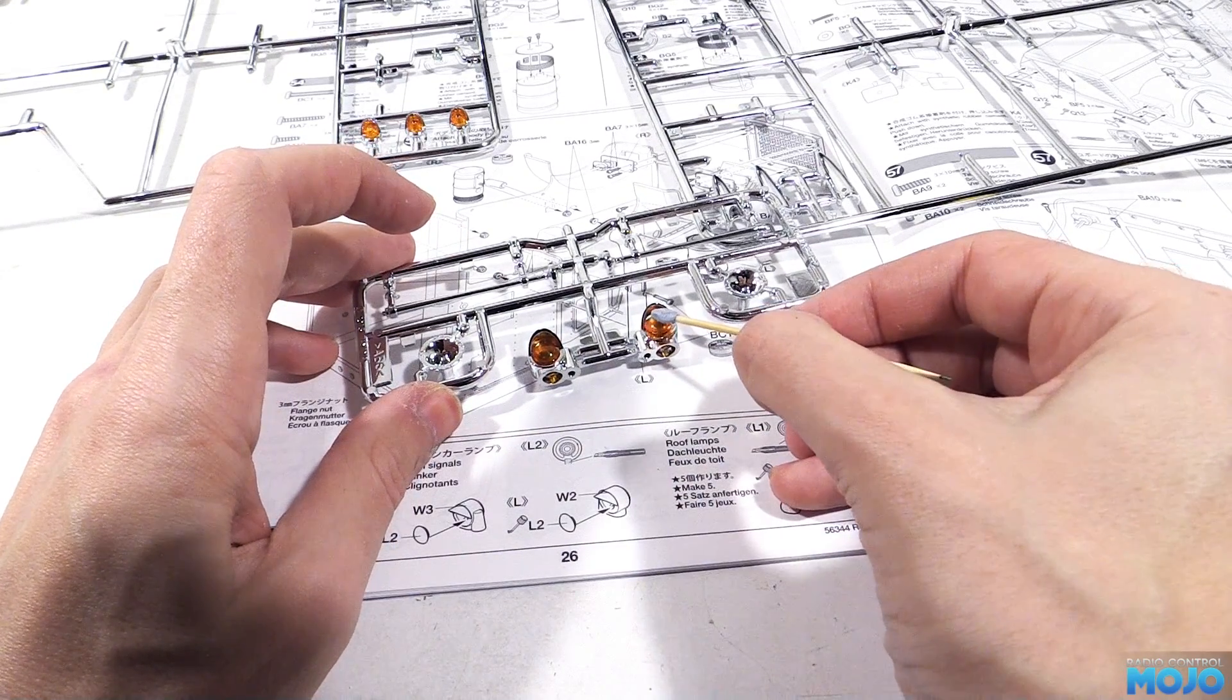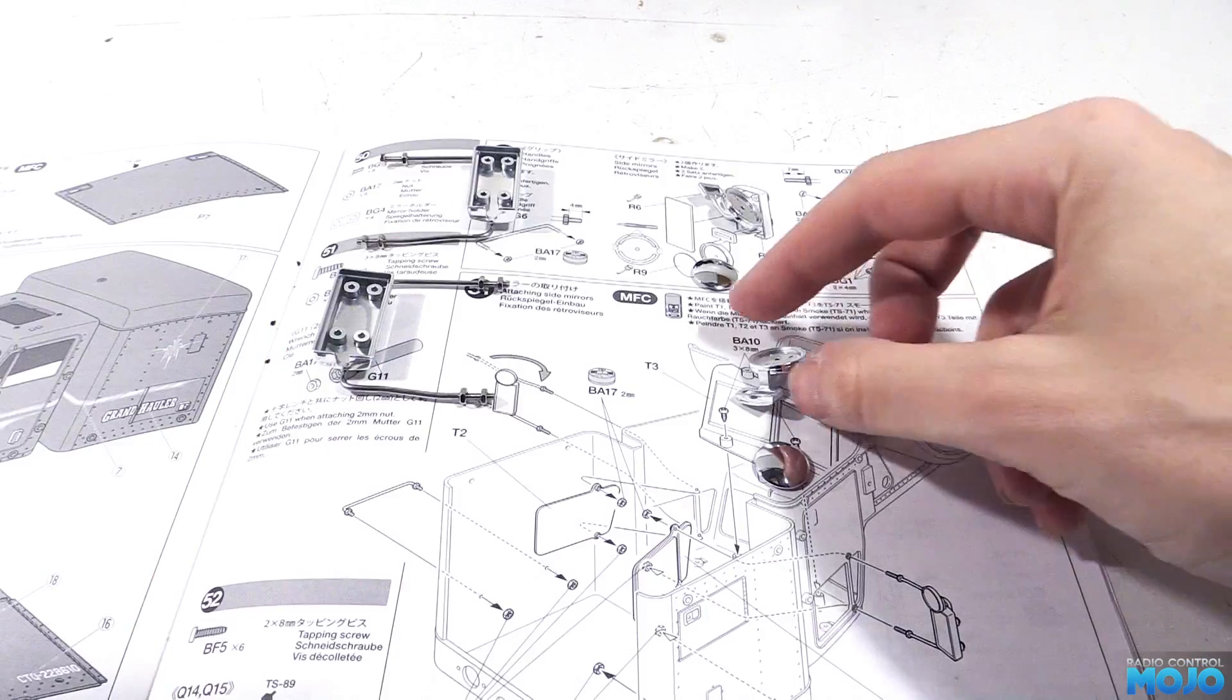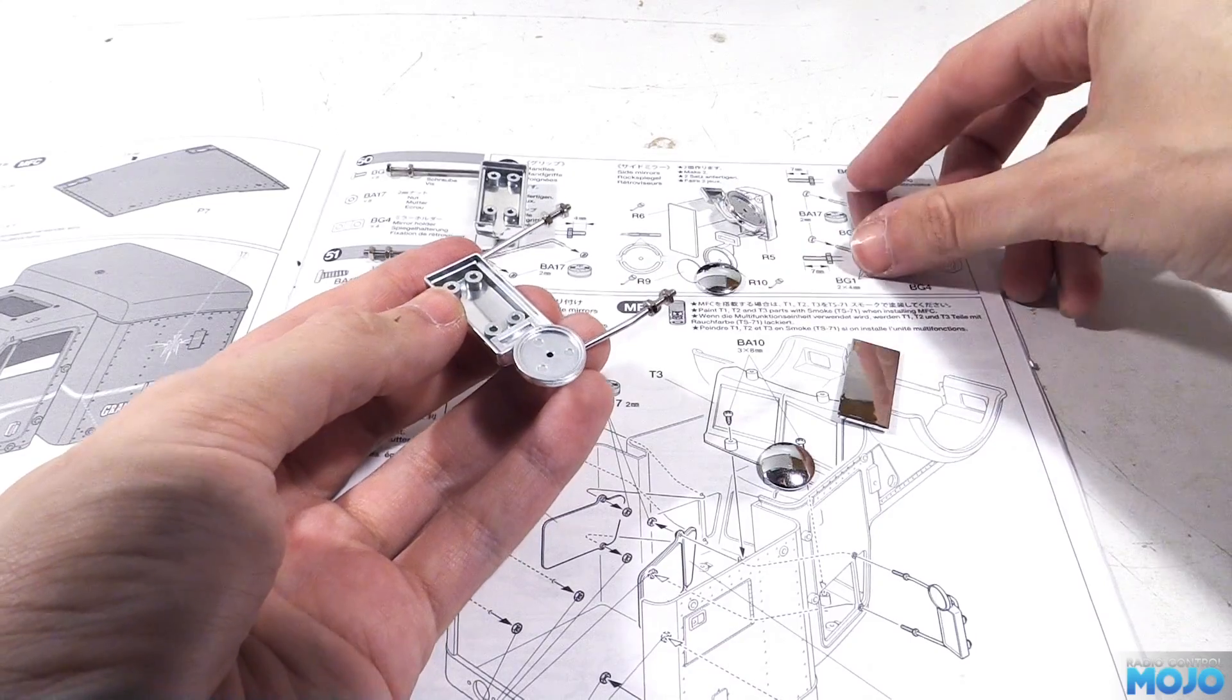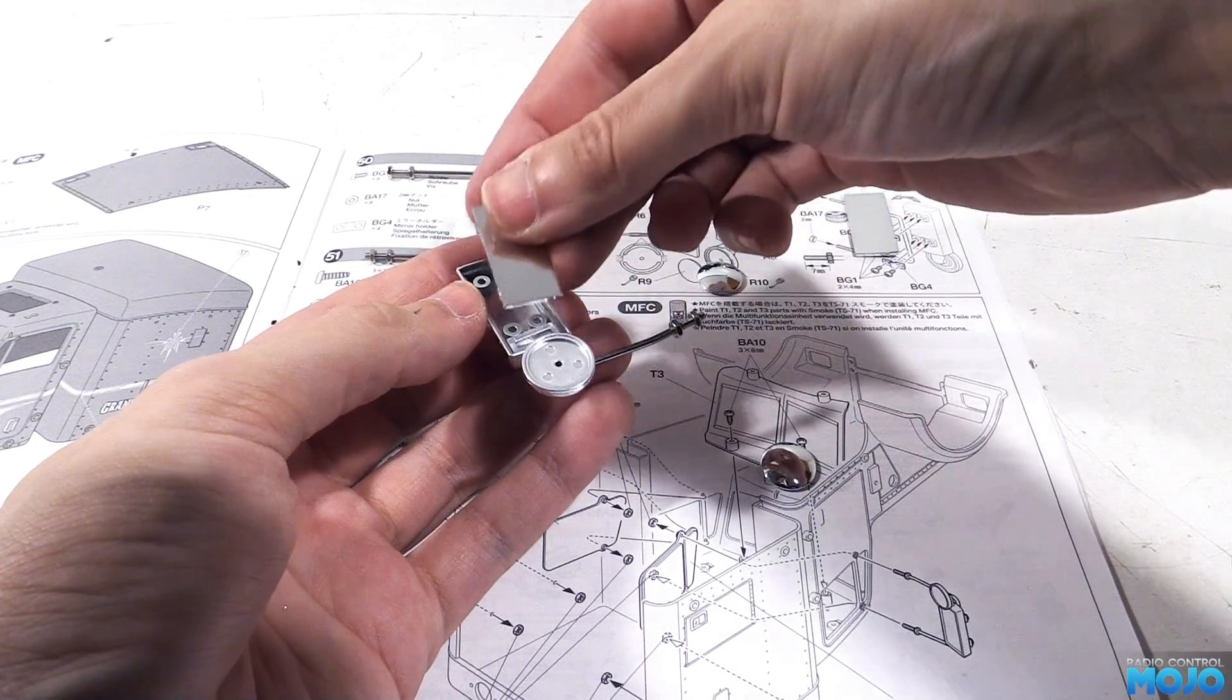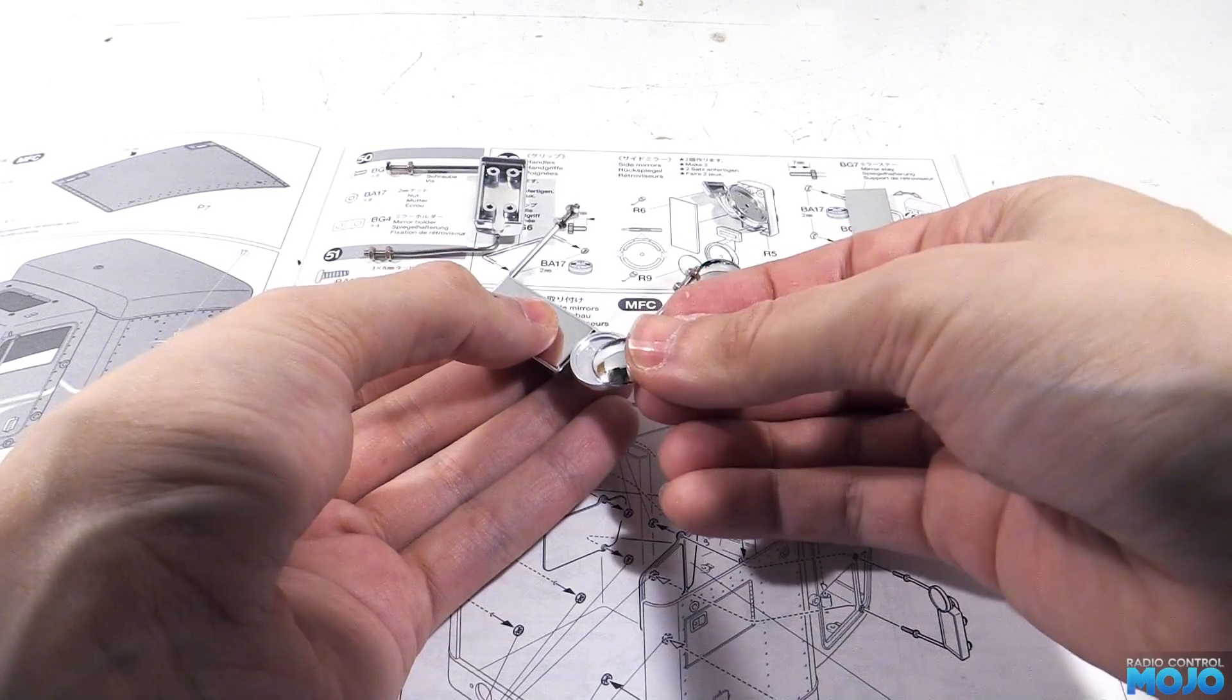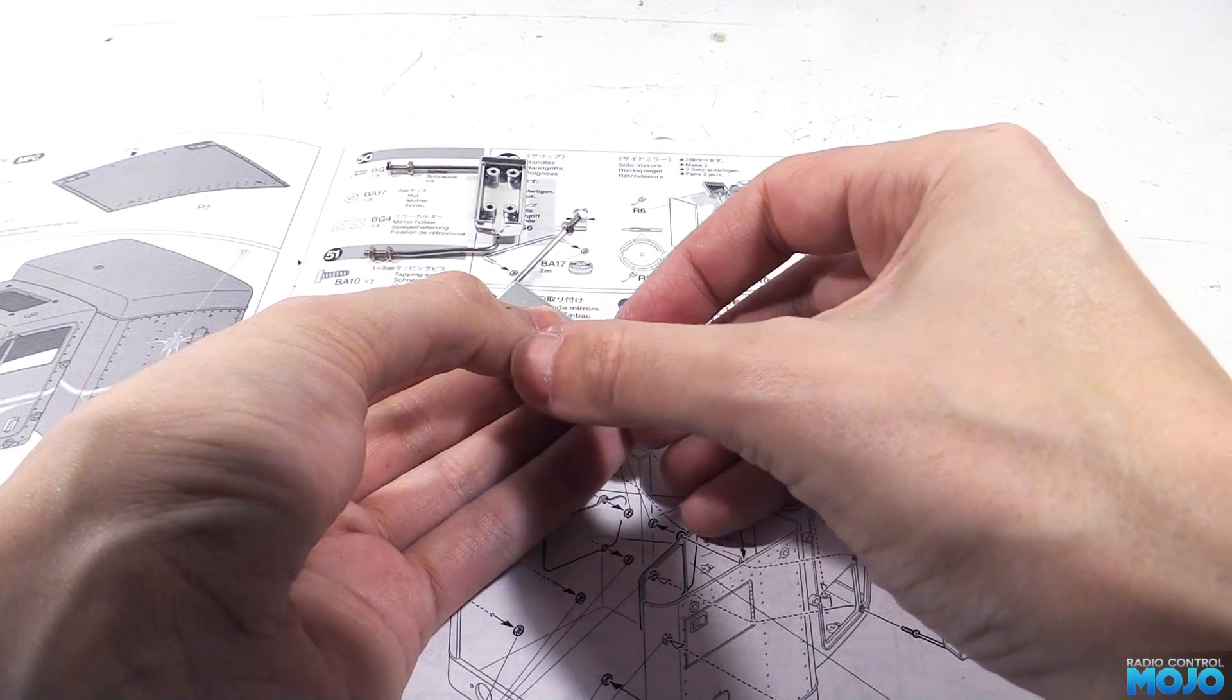So while we wait we can get some more bits gluing up. Right then, the mirrors. There's a few bits to go together. The round back piece slots in at the bottom. Next the main mirror goes in. Then the round mirror. As always it pays to do a dry build just in case things don't quite fit.